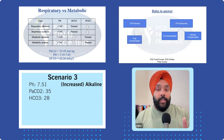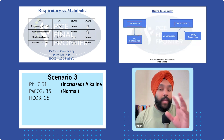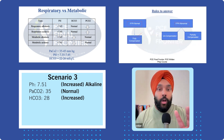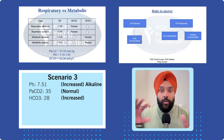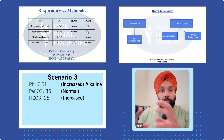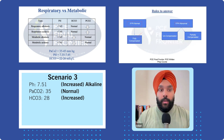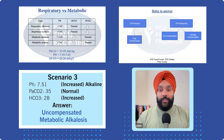Is bicarbonate normal? No — it increased by two points above the normal range. So what do you call it when bicarbonates try to compensate to pull pH into normal limits but it didn't work? It's called uncompensated metabolic alkalosis.